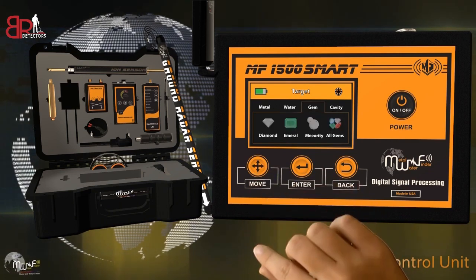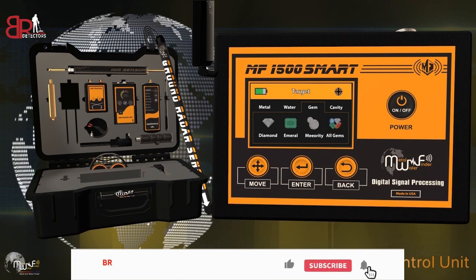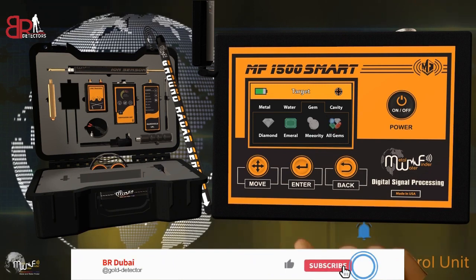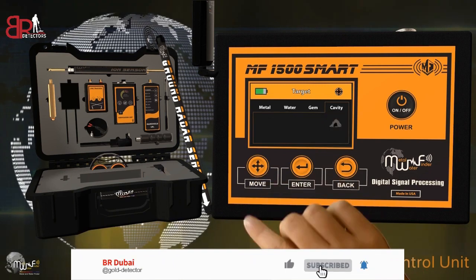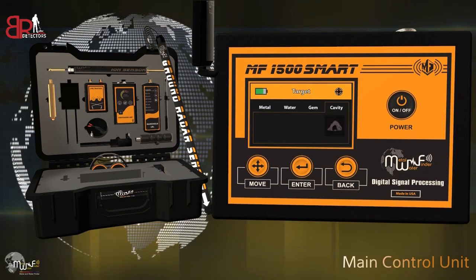The Gems list includes Diamond, Emerald, Meteorite, and All Types of Gemstones. The Cavities list is for detecting Caves, Voids, and Tunnels.